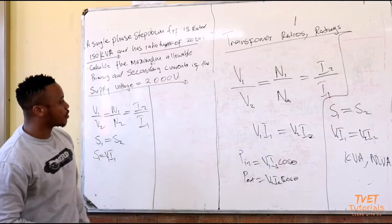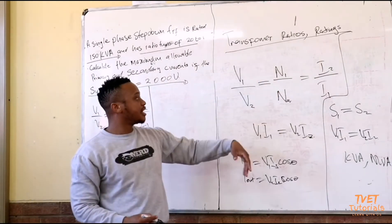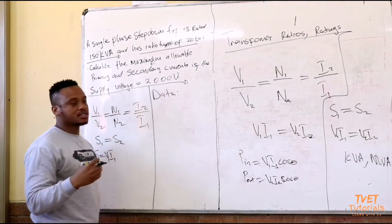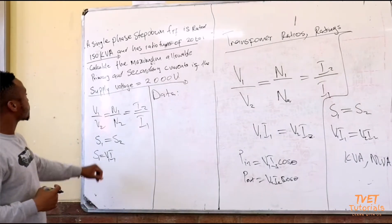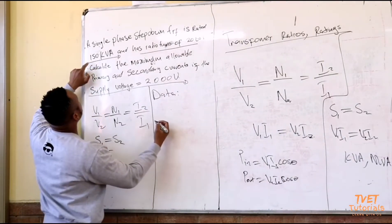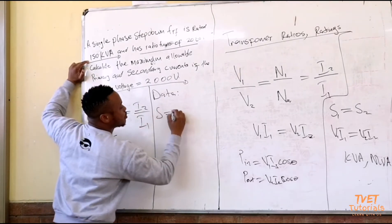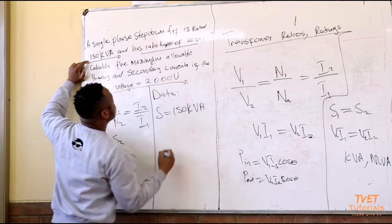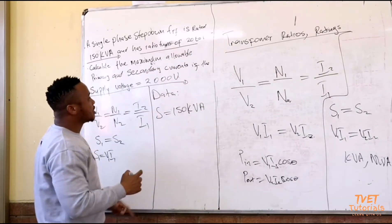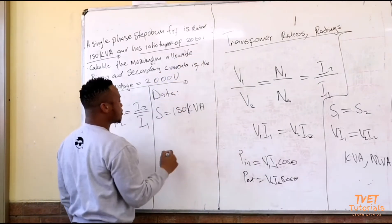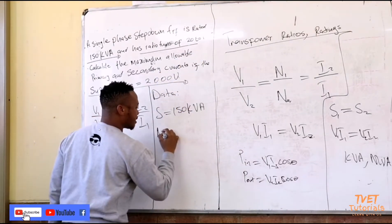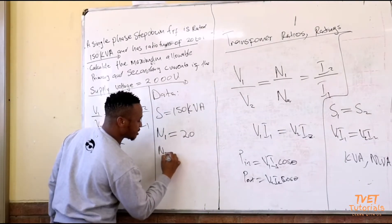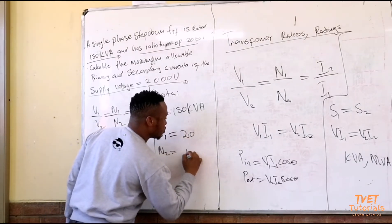Let's look at the given data. First thing I am given an S rating of 150 kVA. I am given the turns ratio of 20 is to 1, so that means that N1 would be equal to 20 and N2 will be 1.